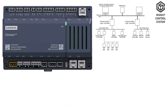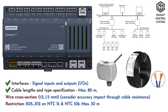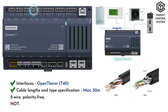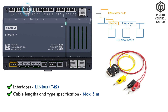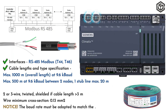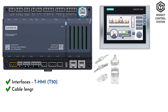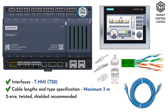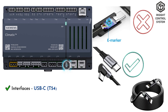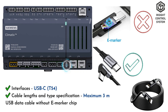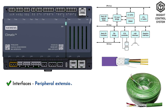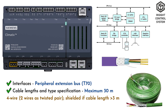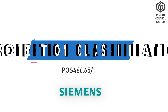Cable lengths and types: Signal inputs and outputs — maximum 80 meters. OpenTherm port — maximum 50 meters. LIN bus port — maximum 3 meters. RS485 Modbus port — minimum 3 meters to maximum 1000 meters. RJ45 HMI interface port — maximum 3 meters. USB-C port — maximum 3 meters. Ethernet port — maximum 100 meters. Peripheral extension bus port — maximum 30 meters.